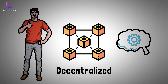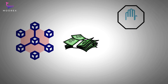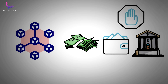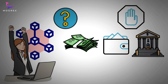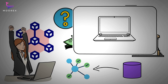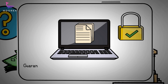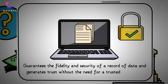Blockchain exists as a substitute way to make transactions without having to deal with online wallets, banks, or third-party applications. It is a distributed database that is shared amongst the nodes of a computer network. As a database, a blockchain stores information in digital format, maintaining a secure and decentralized record of transactions. This technology guarantees the fidelity and security of a record of data and generates trust without the need for a trusted third party.